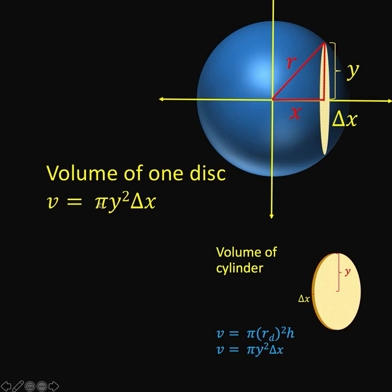A while ago, we already said that the volume of this disk is v equals pi y squared delta x. So knowing that the volume of the disk is pi y squared delta x, then to find out the volume of this entire sphere,